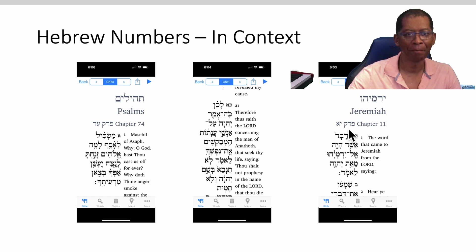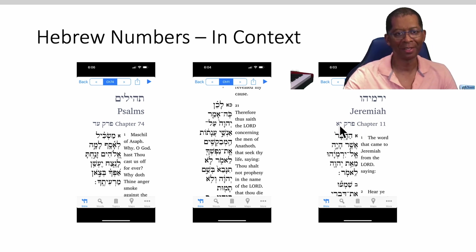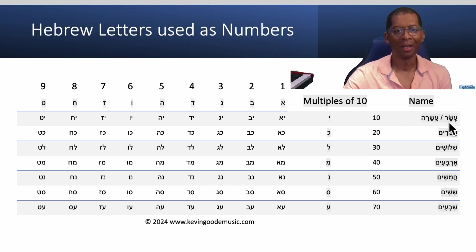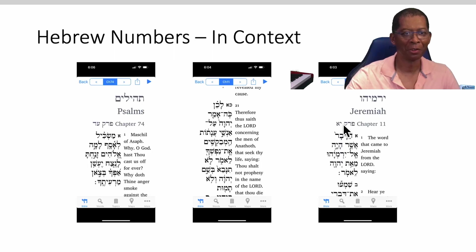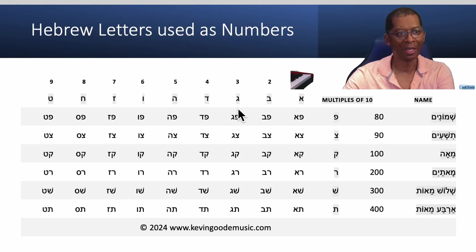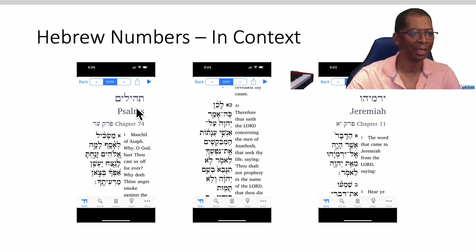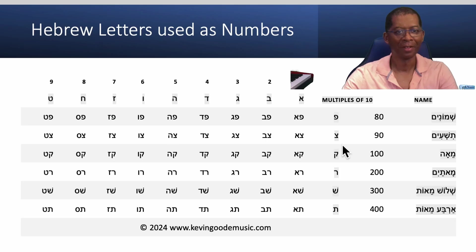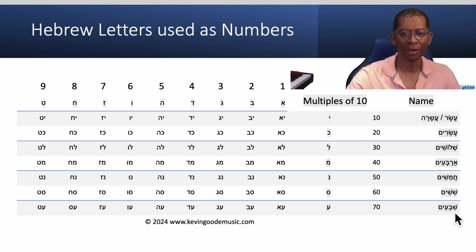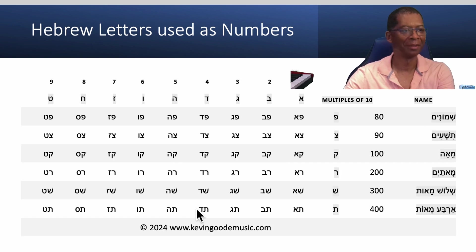I have an example right here. We have Jeremiah, and we have Perik 11, which is Asar v'Achat — and that's Yud and Aleph, right here: Yud and Aleph. And over here we have Jeremiah 21: Kaf v'Aleph. Kaf is twenty, and Aleph makes it twenty-one. And here we have Tehilim, which is basically chapter 74. So that's Shivim v'Arba — Ein and Dalit. Seventy is right here, we know that's Shivim: Ein v'Dalit. Dalit is four. Shivim v'Arba — and that's 74.